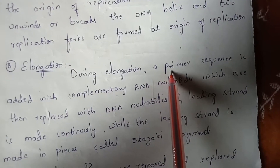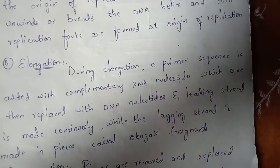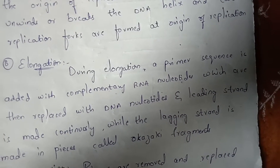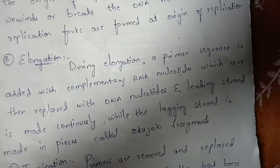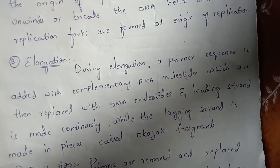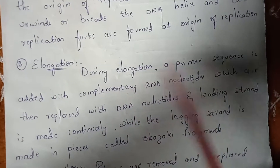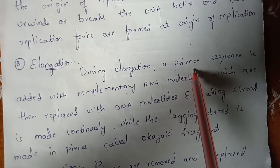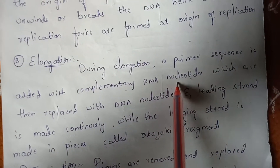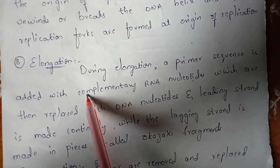Next, let us go to elongation. During elongation, a primer sequence is used. A primer mainly consists of nucleotides — either purines or pyrimidines — and that sequence is known as the primer sequence or nucleotide sequence. During elongation, that nucleotide sequence or primer sequence is added with complementary RNA nucleotides.